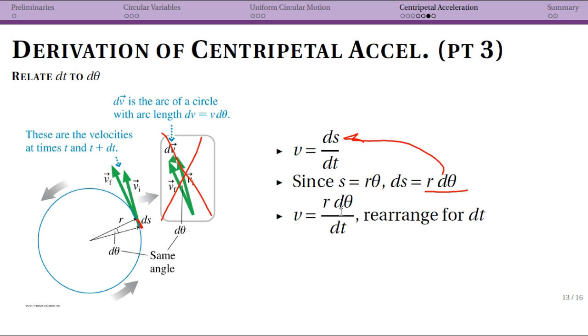But what we actually wanted to do was remove dt from our centripetal acceleration equation. So we need to rearrange this and that leads us to this equation for dt in terms of three things that can be in our answer. So at this point we're almost done.